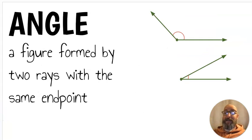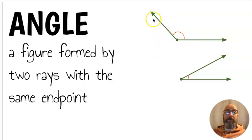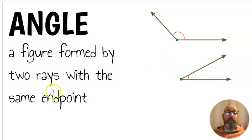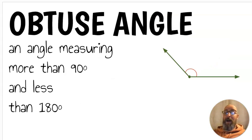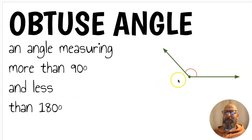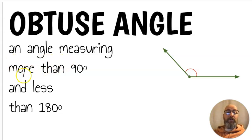Next we have the word angle. An angle is a figure formed by two rays with the same endpoint. Angles can be big, like an obtuse angle, or small, like an acute angle, but either way an angle is a figure formed by two rays with the same endpoint. An obtuse angle is an angle measuring more than 90 degrees and less than 180 degrees. 90 degrees would be a right angle, and an obtuse angle is bigger than that.